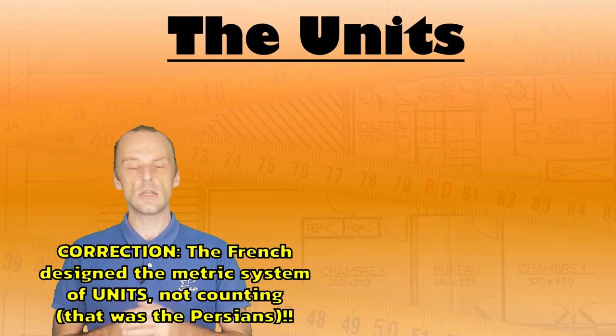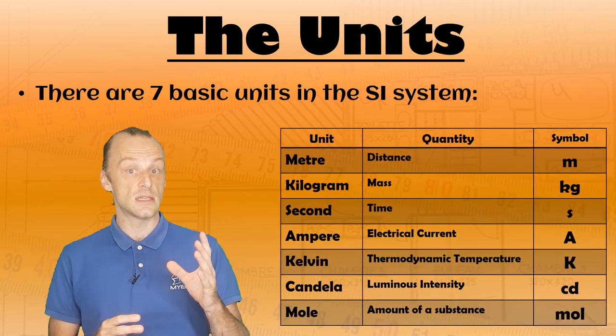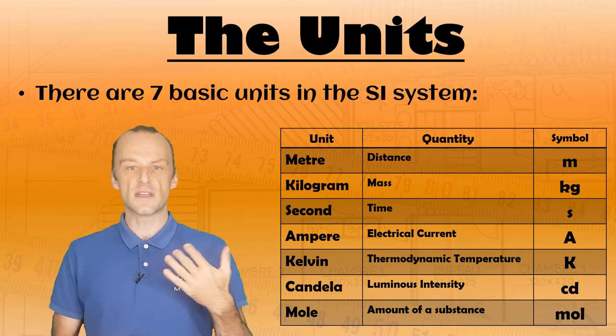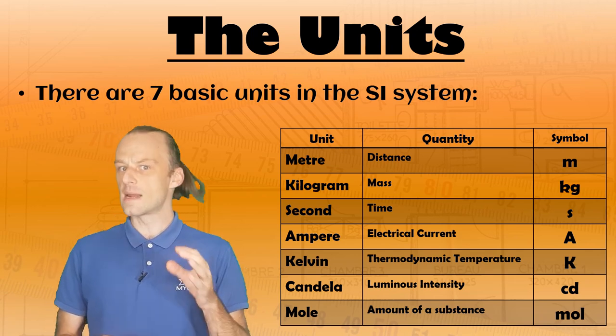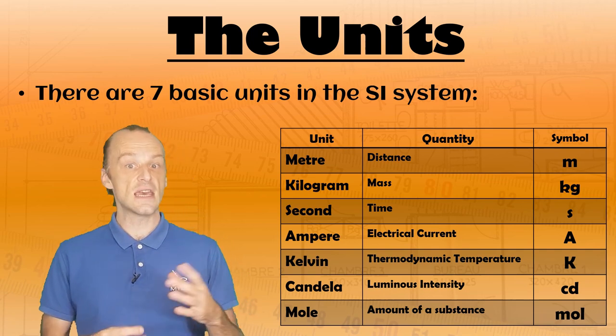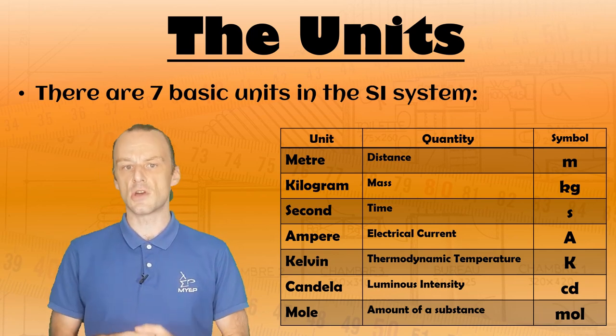There are seven basic units in the SI system. There is the metre to measure distance, the kilogram to measure mass, the second for time, the ampere for electrical current, the kelvin for thermodynamic temperature, the candela for luminous intensity, and the mole for the amount of a substance.